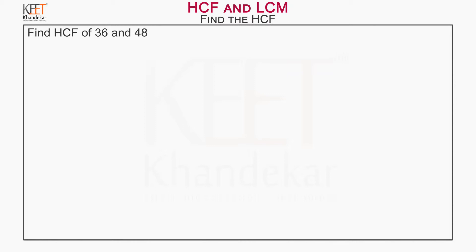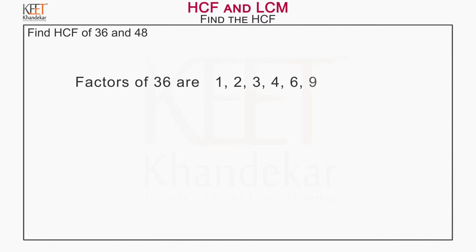To find HCF, we need to find the factors of the given numbers, which we have already learned in the previous videos. The factors of 36 and 48 are on your screen. Factors of 36 are 1, 2, 3, 4, 6, 9, 12, 18 and 36.